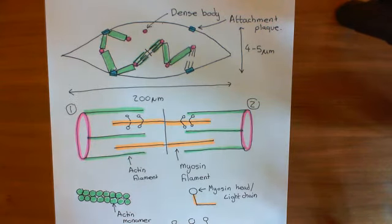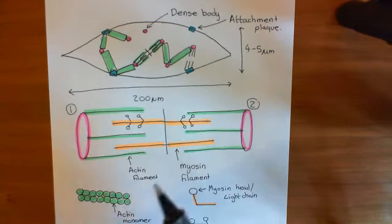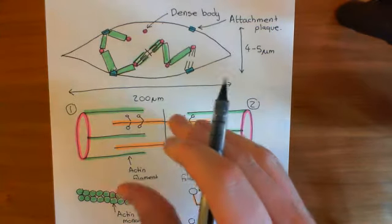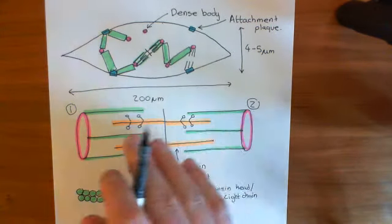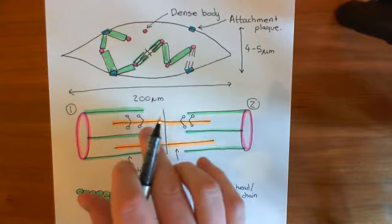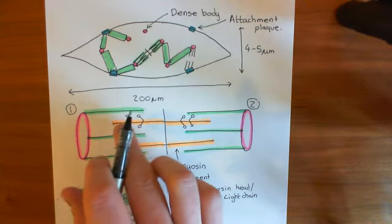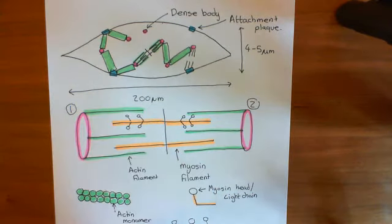In the next video, we'll look at what triggers these smooth muscle cells to contract, and then the actual mechanism by which the myosin filaments climb up the actin filaments.